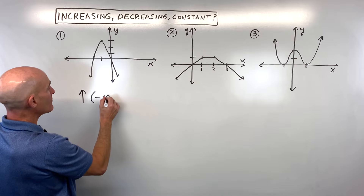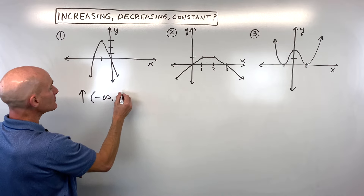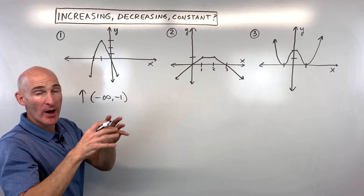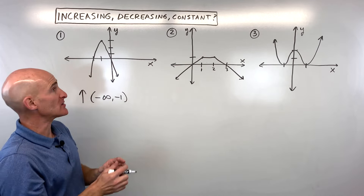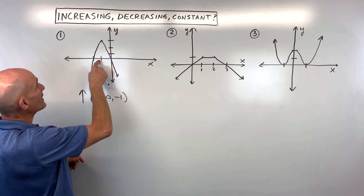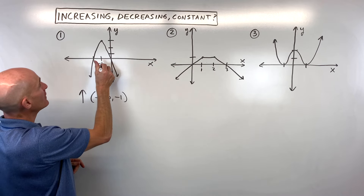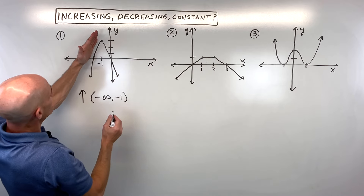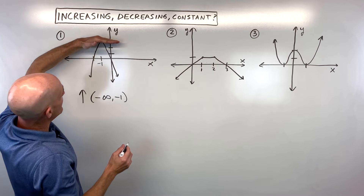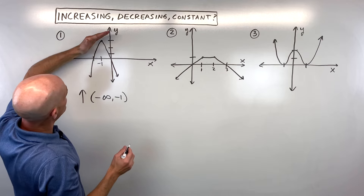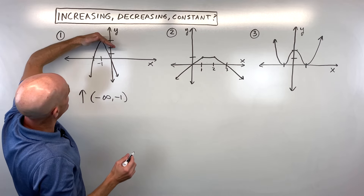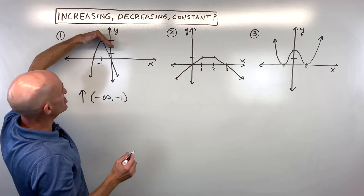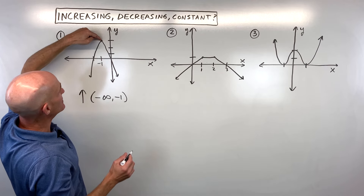Again, remember — open interval. You don't want to include the endpoints, because here at negative one, you can see the graph is switching: is it constant? Is it increasing? Is it decreasing? It's basically switching at this point.